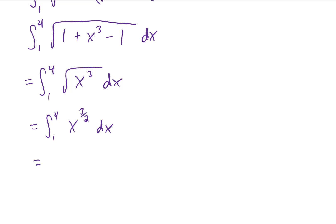Integrating that means raising our power by one. It would give us x to the five halves. We need to divide by that five halves, or in other words, multiply by two fifths, and we need to evaluate this from one to four.